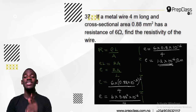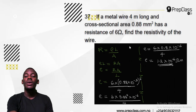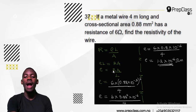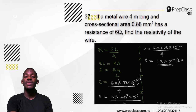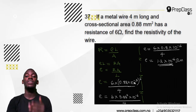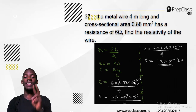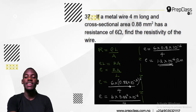I am finding the resistivity, so I will make it the subject of the formula. Cross-multiplying: ρ equals RA over L. Now plug in the values. Resistance is 6 ohms. Area is 0.88 millimetre squared, but you must convert to metres squared. You divide by 1000, which is 10 to the power minus 3. But because it is an area, it is squared, so you divide by 10 to the power minus 6. So A becomes 0.88 times 10 to the power minus 3, all squared, over length L which is 4 metres.